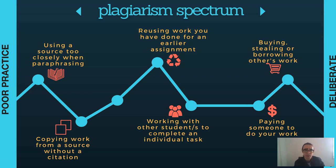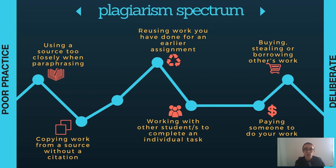In the middle of the spectrum is reusing work you've done for an earlier assignment, or working with other students to complete an individual task — by doing these things you gain an unfair advantage over other students. We must always start new assignments from scratch and complete work individually unless collaboration is permitted. At the deliberate end of the spectrum is buying, stealing, or borrowing other people's work, or paying someone to do your work for you. These are considered very serious breaches and are penalised quite severely.